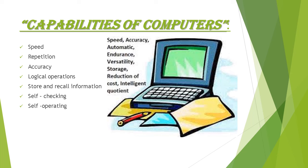The computer can make decisions based on some conditions and take an alternative course of action accordingly. We set some conditions for the computer — if this condition is true, do this; if not, do something else. In this sense, the computer can perform better than a machine or human. This is also a good capability.